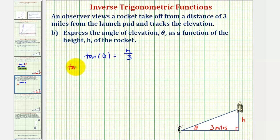If we take inverse tangent of both sides of the equation, we'd have inverse tangent of tangent theta equals inverse tangent of H divided by three. Looking at the left side, inverse tangent of tangent theta equals theta. On the right side, we have inverse tangent of H divided by three. Now we have theta as a function of H, so we could write θ(H) equals inverse tangent of H divided by three.